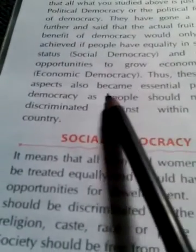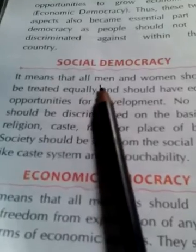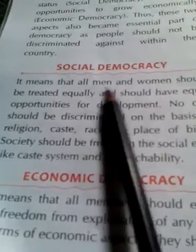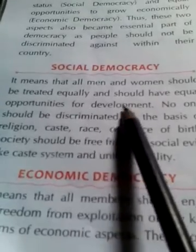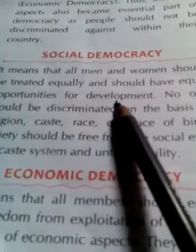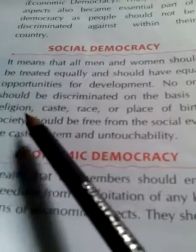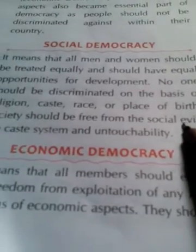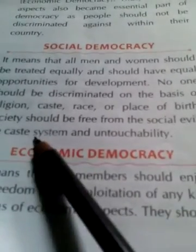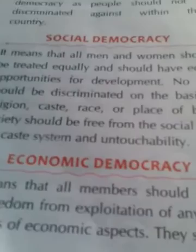Social democracy means that all men and women in society should be given equal status. There should be no discrimination on the basis of caste, religion, or place of birth. Practices like untouchability must be abolished.